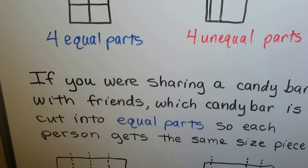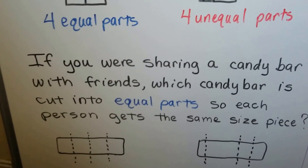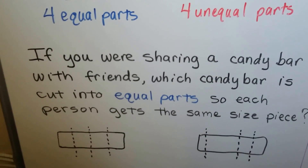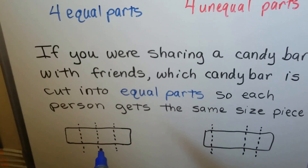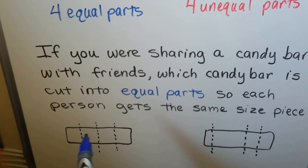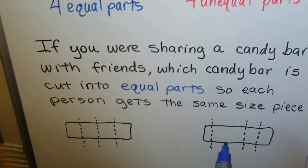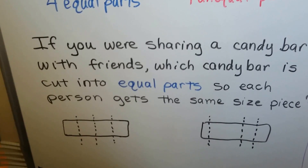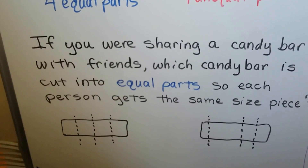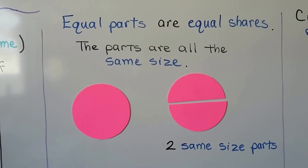If you were sharing a candy bar with friends, which candy bar is cut into equal parts so each person gets the same size piece? It would be this one — then everyone would get a fair share, an equal share. If it were cut like this, somebody would get a very little piece and somebody would get a very big piece. That's not an equal share. Equal parts are equal shares — the parts are all the same size.